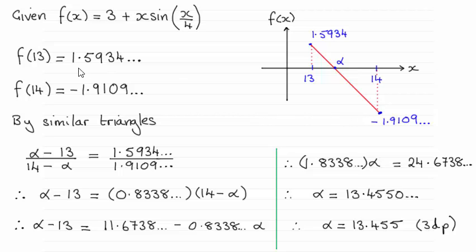So we know that f of 13, if you just substitute 13 into here, make sure you're in radians mode though, comes out at 1.5934 and so on. And I've marked that on here, positive value. When you do f of 14, comes out as a negative value, minus 1.9109 and so on. So I put it down here.